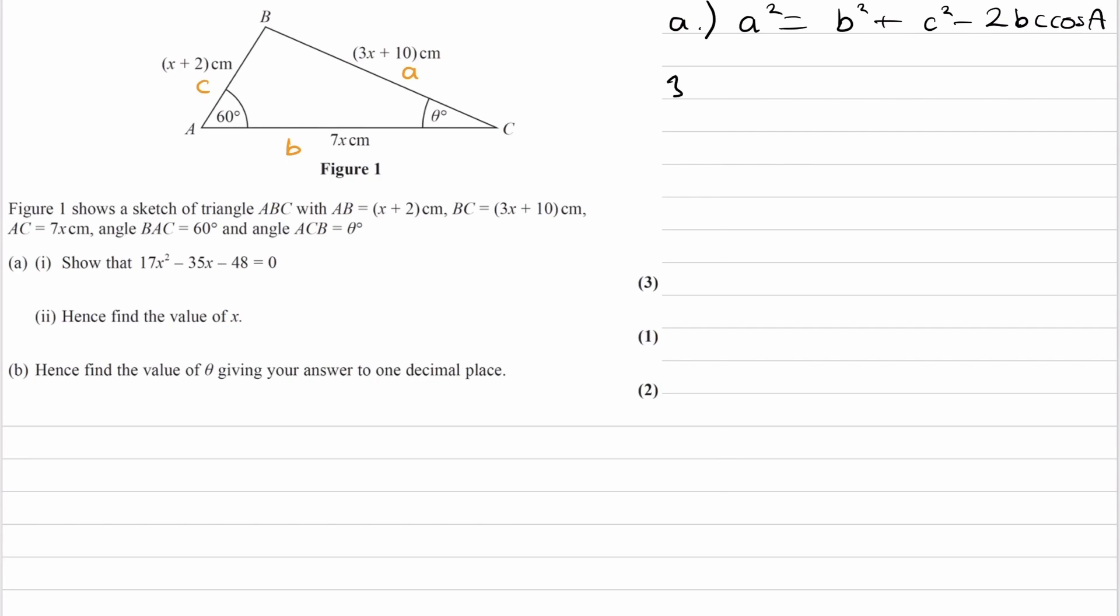So putting everything in, we end up with 3x plus 10 squared is 7x squared plus x plus 2 squared minus 2BC. So minus 2 times 7x times x plus 2, running out of space here, times cos 60. Okay.